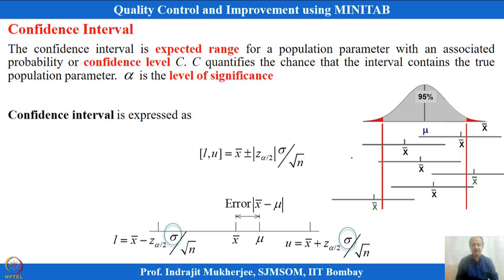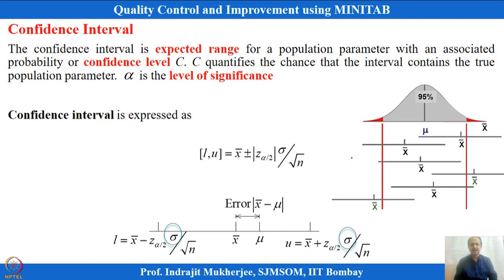Another important concept required as we move forward is the confidence interval. The confidence interval idea says that exactly hitting the population average is not possible. For example, from an apple tree I take 4 or 5 apples and try to predict the population average weight — doing destructive testing many times is uneconomical.